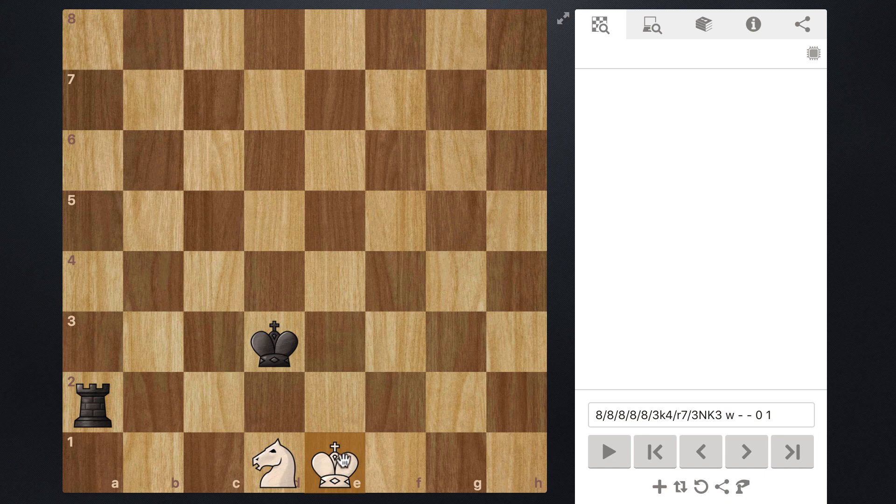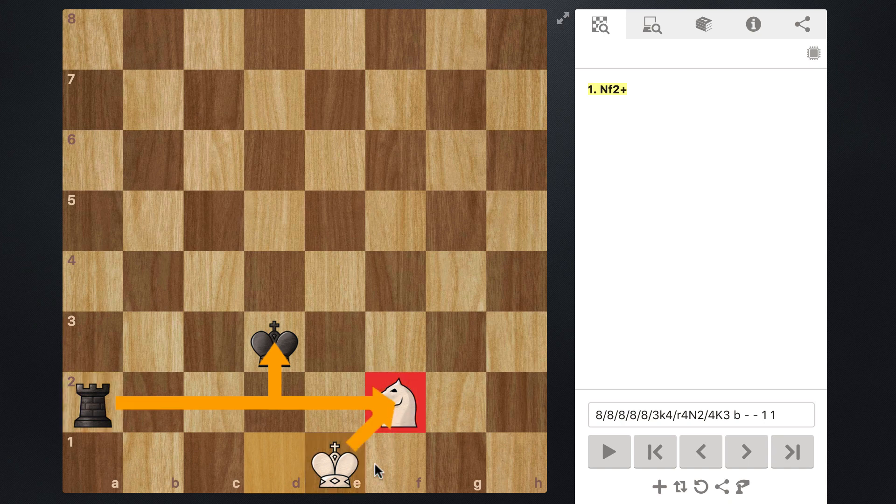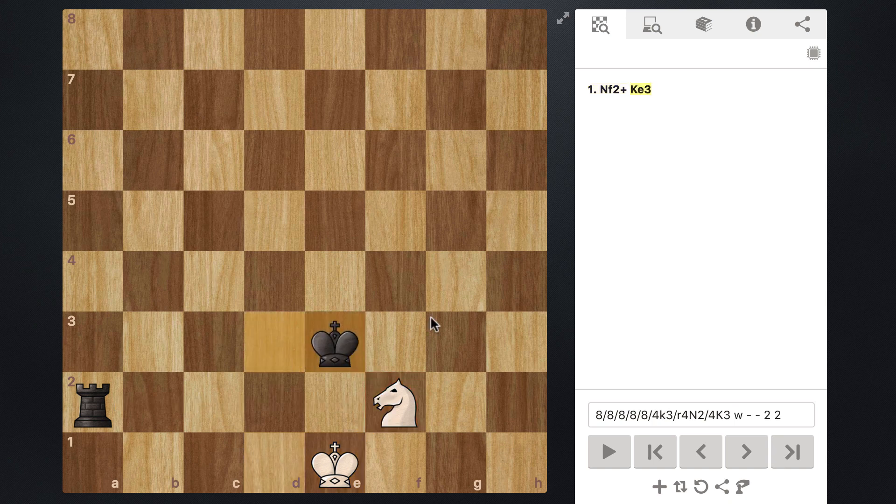Alright, so with that being said, white to move. Let's play first knight to f2. So this is going to check the enemy king. And it also allows where if rook takes, then we just take back and draw, mission accomplished. So knight to f2, of course they don't want to take. So instead they're just going to probably push king to e3.